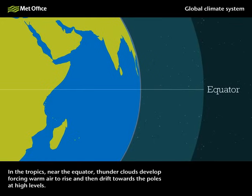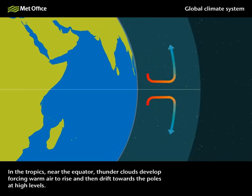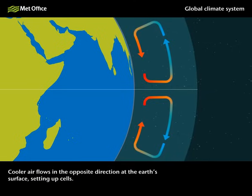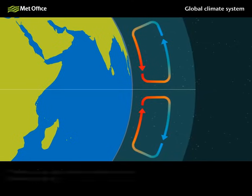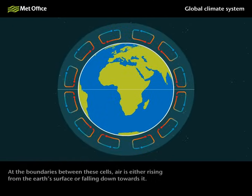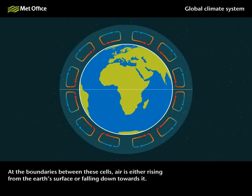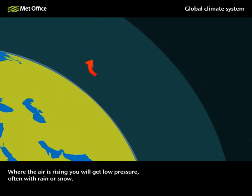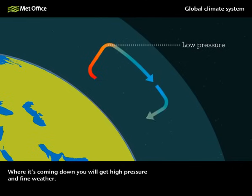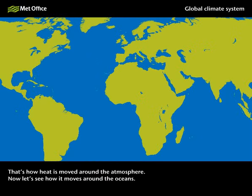In the tropics, near the equator, thunderclouds develop, forcing warm air to rise and then drift towards the poles at high levels. Cooler air flows in the opposite direction at the Earth's surface, setting up cells. Similar cells develop in other areas as you move towards the poles. At the boundaries between these cells, air is either rising from the Earth's surface or falling down towards it. Where the air is rising, you will get low pressure, often with rain or snow. Where it's coming down, you will get high pressure and fine weather. That's how heat is moved around the atmosphere.